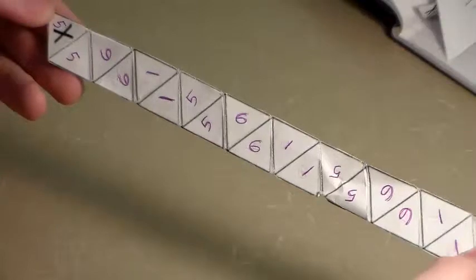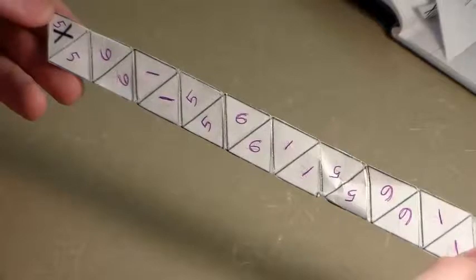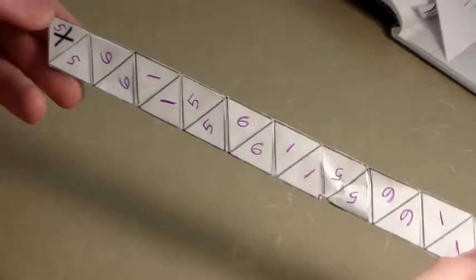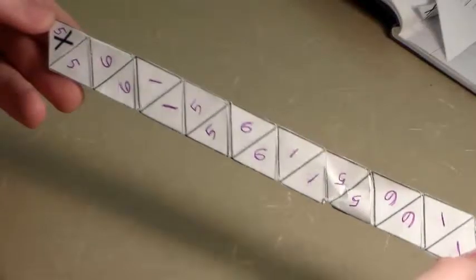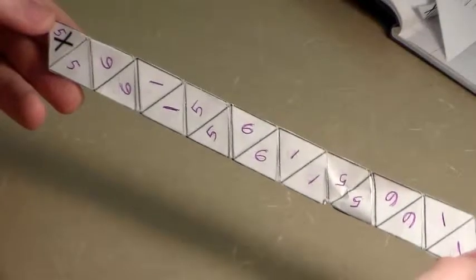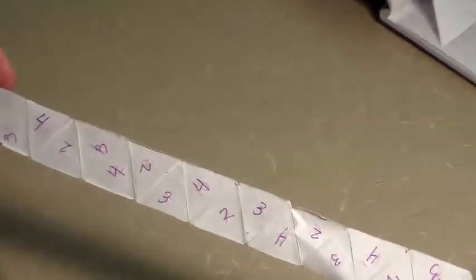When we unwound the six-sided hexaflexagon, we noticed a pattern on the numbering of the sides. For instance, on this side, we saw that all the numbers were doubled. 5, 5, 6, 6, 1, 1, on and on and on. Now when we flip the strip over, we can see a repeating group of three numbers, 2, 3, and 4, all the way down.